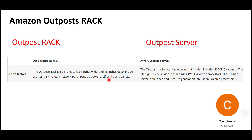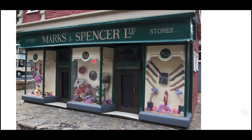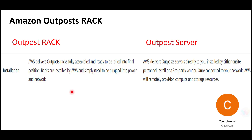Hardware will come to your office and AWS will deploy and install it there. For Outpost Rack, once the racks are installed by AWS, they simply need to be plugged into power and network. For Outpost Servers, once connected to your network, AWS will remotely provision compute and storage resources. With Rack, everything is provisioned on-premises; with Servers, provisioning happens remotely.